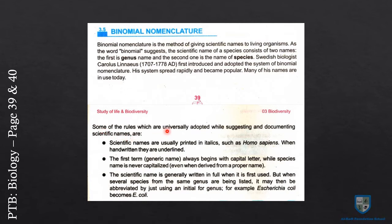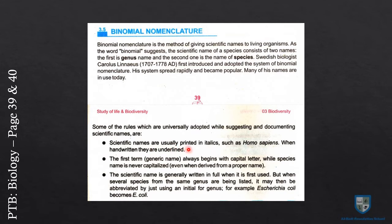Some rules are universally adopted when suggesting and documenting scientific names. First, scientific names are usually printed in italics — for example, Homo sapiens. When handwritten, they are underlined. Homo sapiens is the scientific name for human beings.